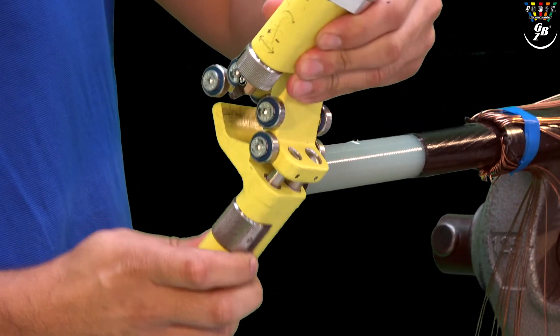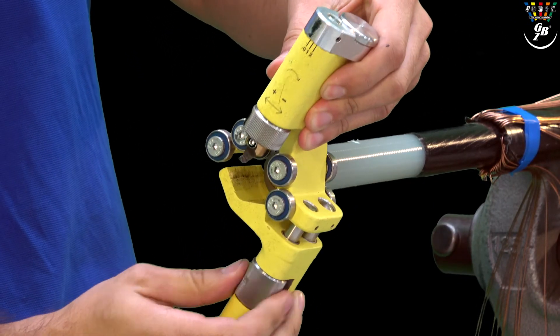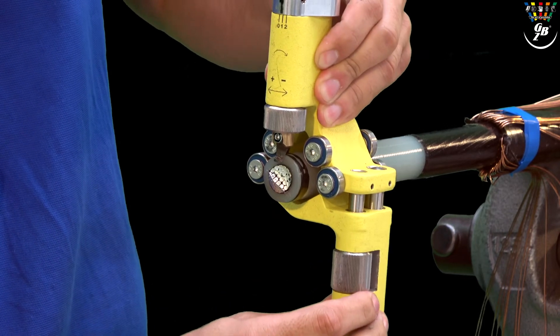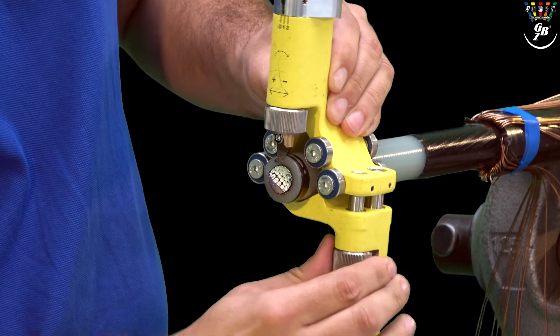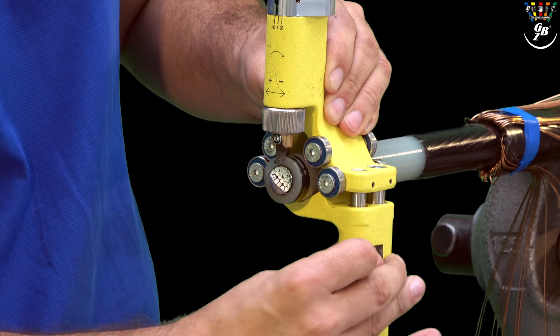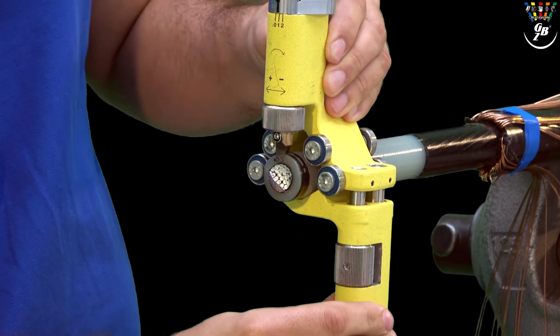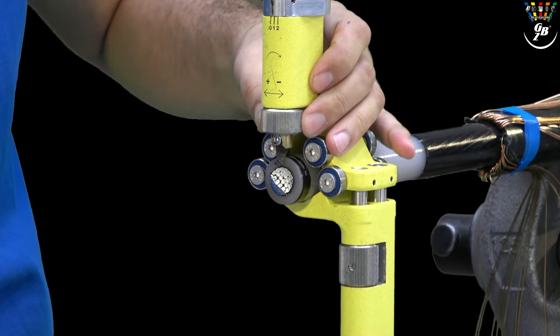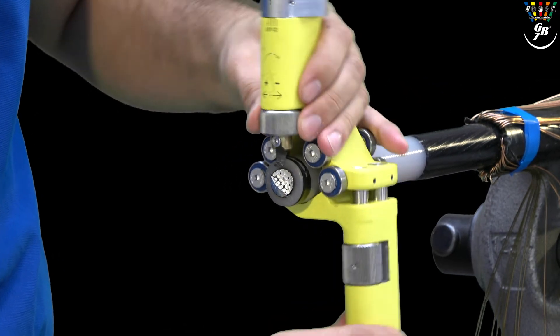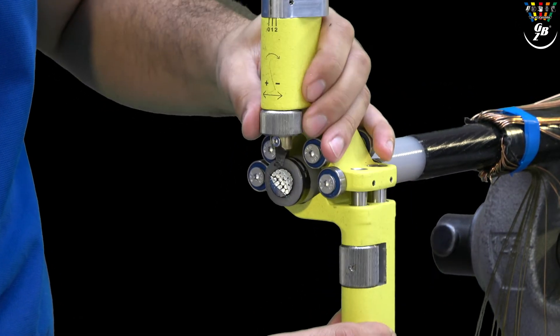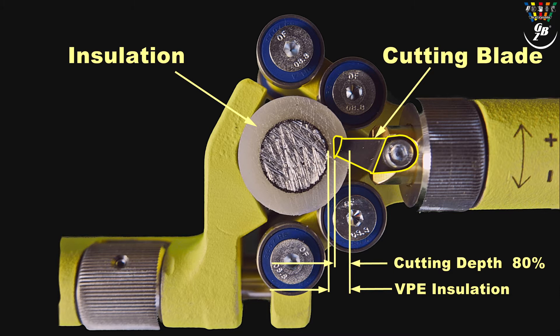The sheath cutter GBP20 will be mounted on the cable as in the first step and the cutting depth has to be adjusted. The blade is only adjusted to a cutting depth of approximately 80% of the insulation to avoid damaging the conductor.